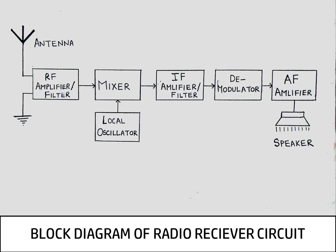So here is a block diagram of a radio receiver circuit. Looking at the first component, we have the antenna. It receives the modulated frequency waves from the surrounding. But what are these modulated waves?